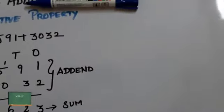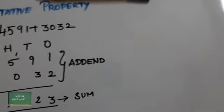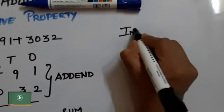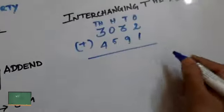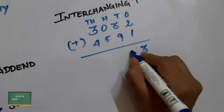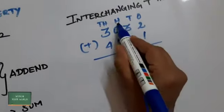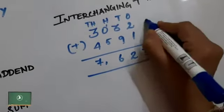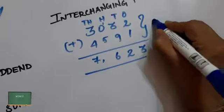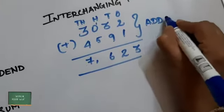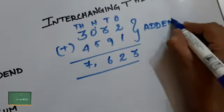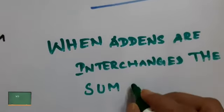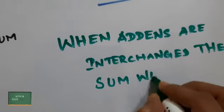Now let's interchange the addends and check whether the sum is the same. Here I have interchanged the numbers and calculated according to the place values. The sum obtained after interchanging the addends is the same as the previous one. When the addends are interchanged, the sum will be the same.